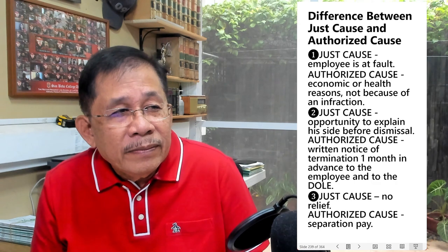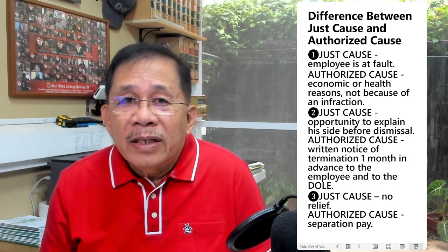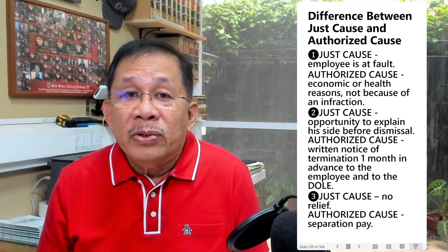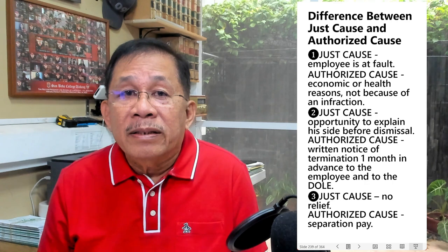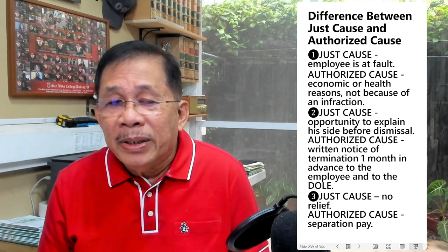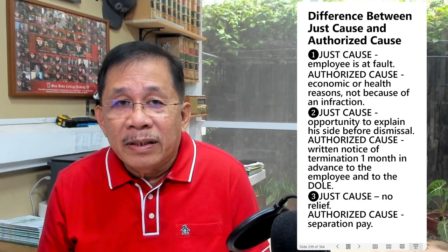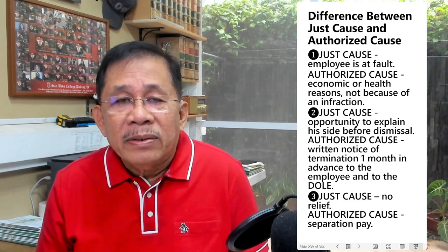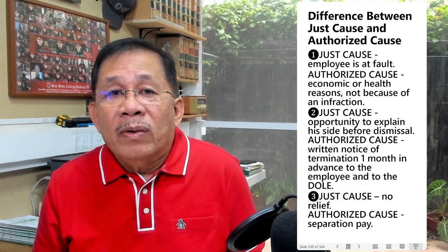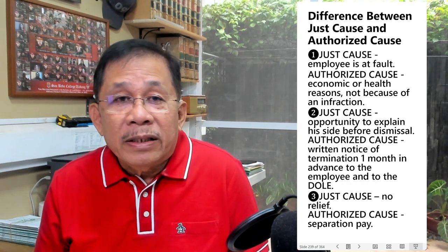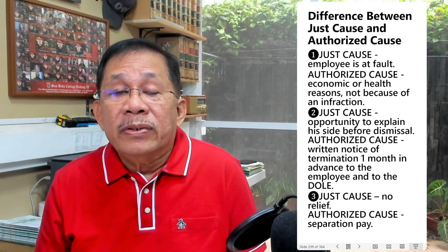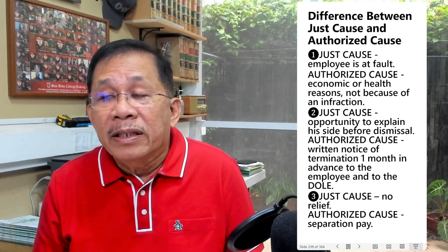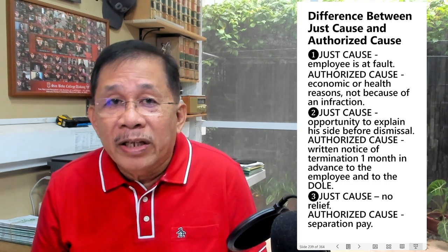Second distinction: dismissal for just cause obliges the employer to give the employee opportunity to explain before imposing the penalty of dismissal. Whereas in dismissal for authorized cause, it merely requires a written notice of termination served one month in advance to the employee and to the Department of Labor.